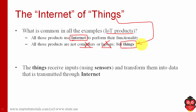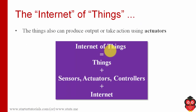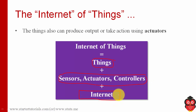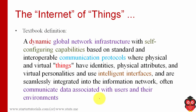IoT means Internet of Things. These 'things' can be any devices, like those seen in the examples, and those devices are connected to the internet. Generally, those things are equipped with sensors. Sensors gather data, send it to the internet where it can be stored in servers, analyzed, and used to extract information and make decisions. Internet of Things is the combination of things, sensors, actuators, controllers, and the communication that takes place through the internet.